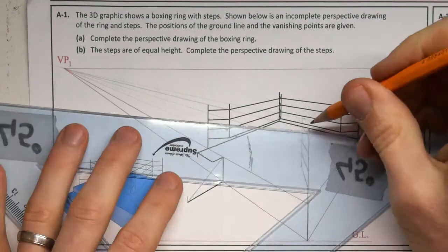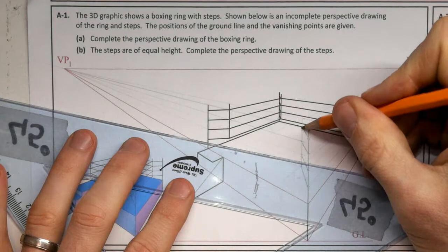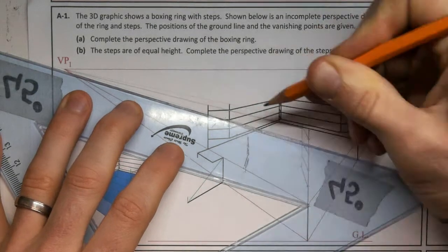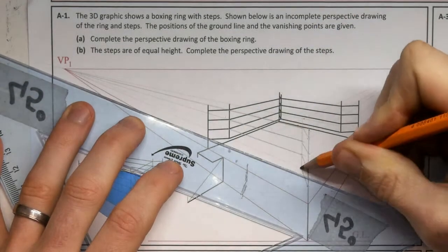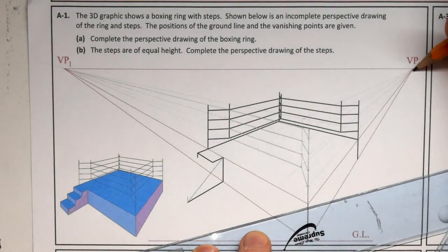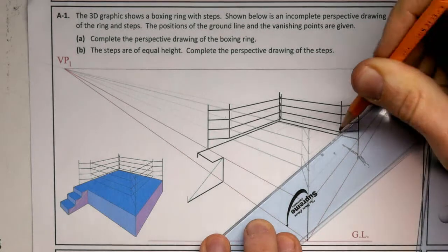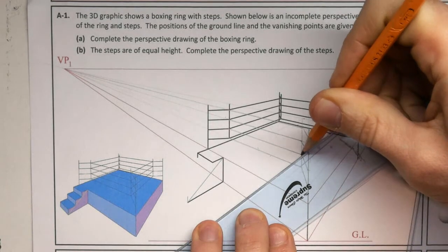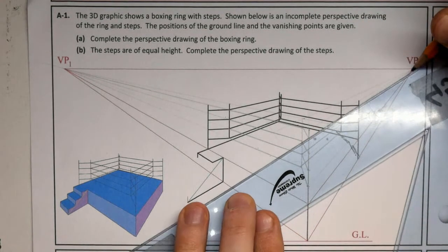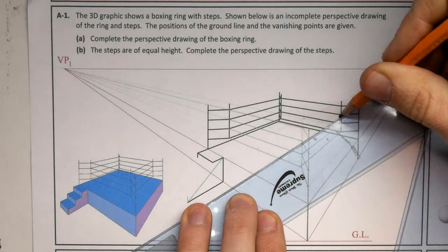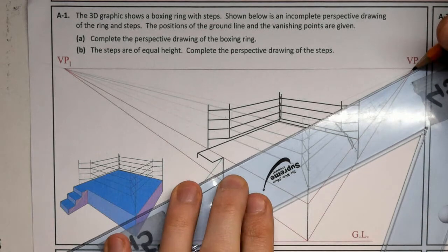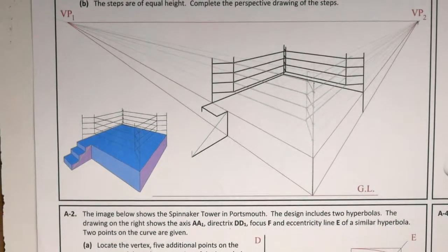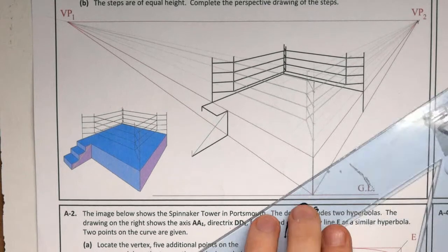And actually now I can heavy those in, because there, that's the position of the ropes running on the side of the gym, or the boxing ring. And complete the same running through here. Like I said, a little bit of construction in that. I'm also just going to heavy out around the side of the boxing ring.